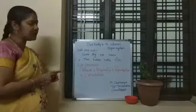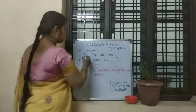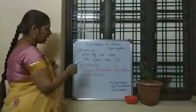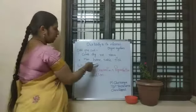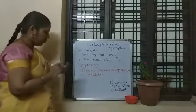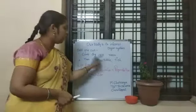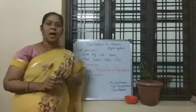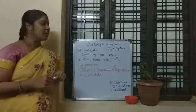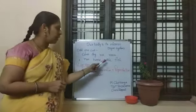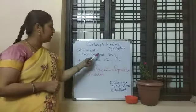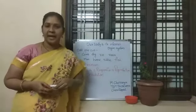So what is the odd one in the first group? Comb. Am I right? And what is the odd one in the second group? Table. So, comb and table both are the odd ones in the entire two groups. Why? Because these two are non-living things and the remaining are living things.